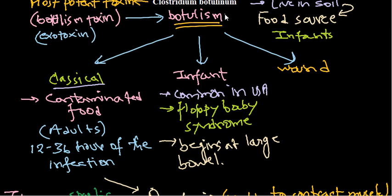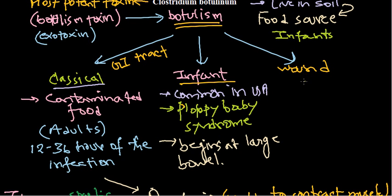In classical botulism, whatever contaminated food is taken, the infection usually begins at the gastrointestinal tract and then starts spreading from one place to another. In infants, the infection first begins at the large bowel, then moves and finally leads to stiffening of the muscle and inability to contract the muscle.